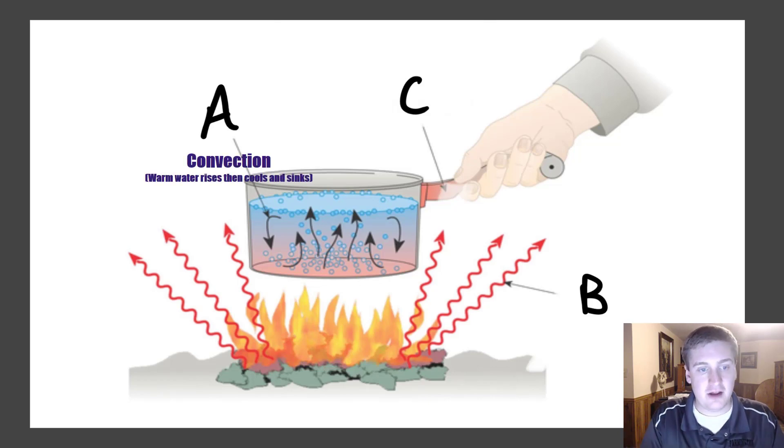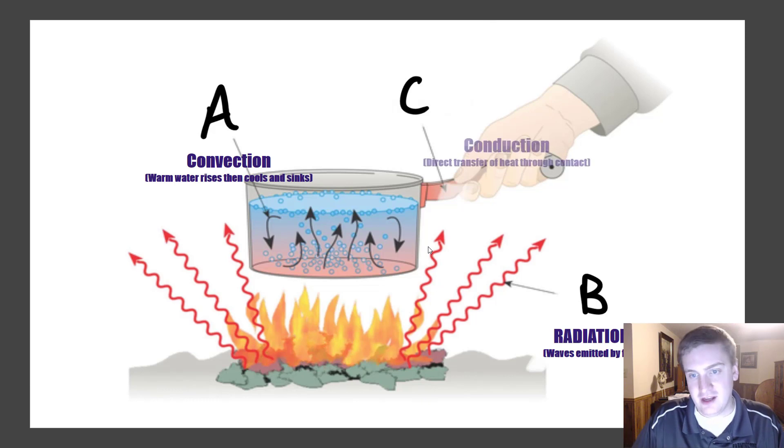Okay, so to go over these, A was the process of convection. So that's, for example, when warm water rises and then cools. So you have heat transfer through a fluid. B was our radiation. That was just waves of electromagnetic radiation that are emitted by the fire. And then C is conduction. So that was, I grabbed that really hot handle of the pan, because you have heat that's directly transferring through the metal, basically, through molecular collisions, interactions.